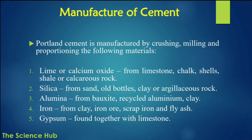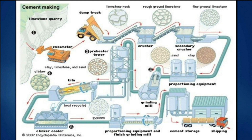Portland cement is manufactured by crushing, milling, and proportioning the following materials: first, limestone — calcium oxide obtained from limestone rocks, chalk, and shells; second, silica — obtained from sand, old bottles, clay, or argillaceous rocks; third, alumina — obtained from bauxite, recycled aluminium, and clay; fourth, iron — obtained from clay, iron ore, scrap iron, and fly ash. Gypsum is found together with limestone.